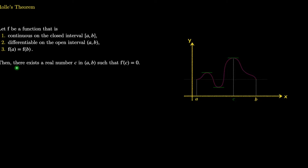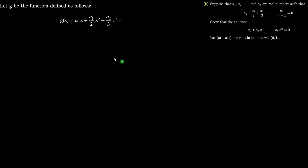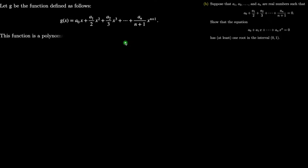Now let us solve the second part of the problem. I am motivated by the relation given and define a function g of x equal to a₀x plus a₁ over 2 times x squared plus a₂ over 3 times x cubed up to aₙ over n plus 1 times x to the power n plus 1. The coefficients match exactly those in the problem statement. This function is a polynomial of degree n plus 1 with no constant term.